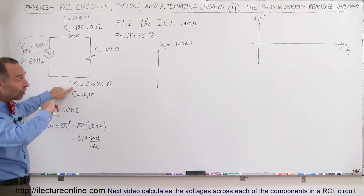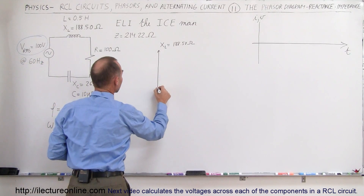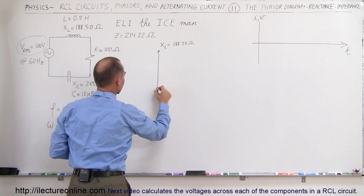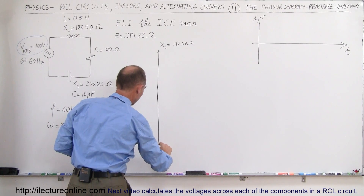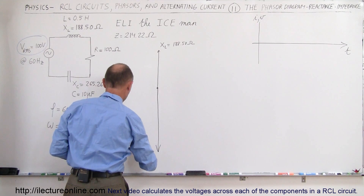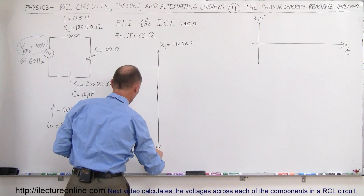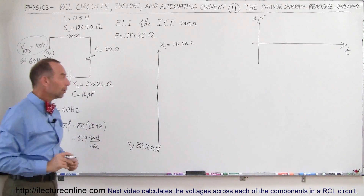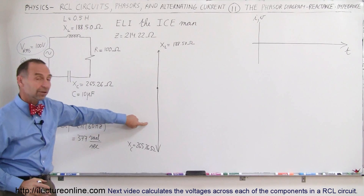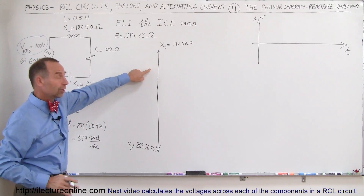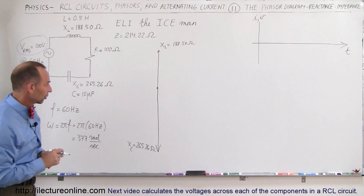Notice that the capacitor reactance, which is 180 degrees out of phase with inductive reactance, will then be down here. And since it's a larger number, we have to draw a larger arrow right here. So X sub C is equal to 265.26 ohms. Which means that when we add those two up, you can see there's a greater capacitor reactance than inductor reactance, so the capacitor overpowers the inductor in this particular circuit.